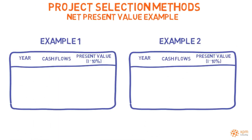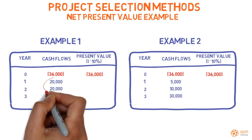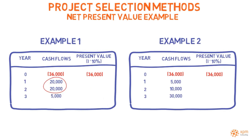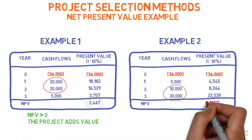Here are two examples. Both projects have the same amount of investment — $36,000 — and the same return — $45,000. However, in the first example, most of the return is generated in the first two years, while in the second, most of the return is generated in the last two years. This difference will have a strong impact on present values once a discount rate is applied. The first example has a positive net present value, while the second has a negative one.